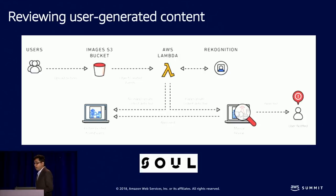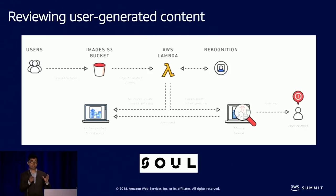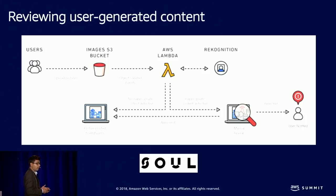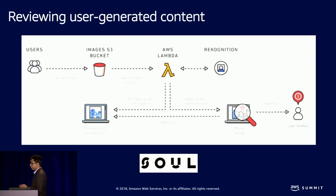Svol Platform is a platform for dating websites and is using Rekognition in production to ensure unsafe images don't go through, with a workflow of automatic review followed by machine-human review.